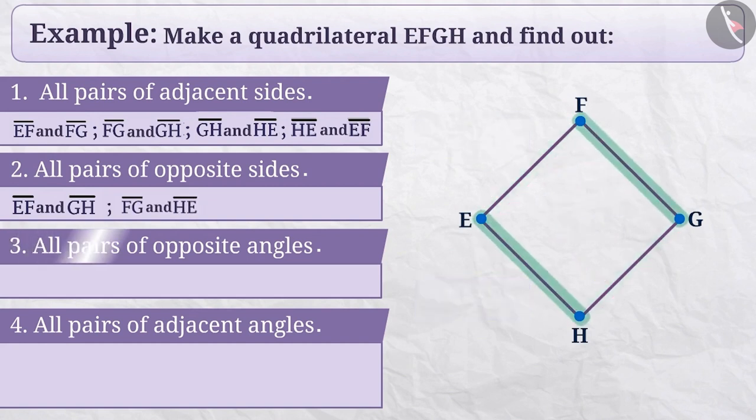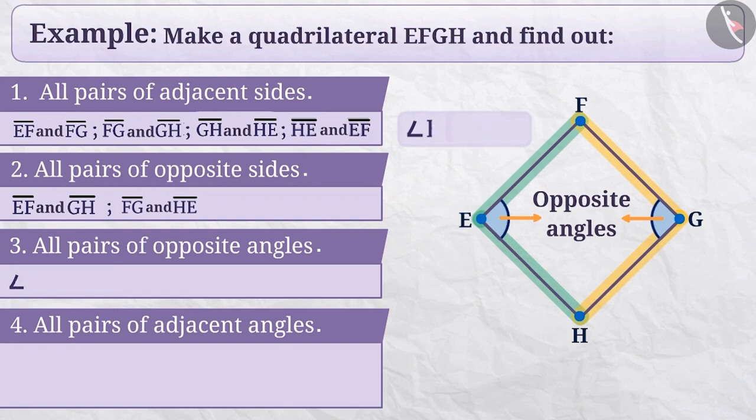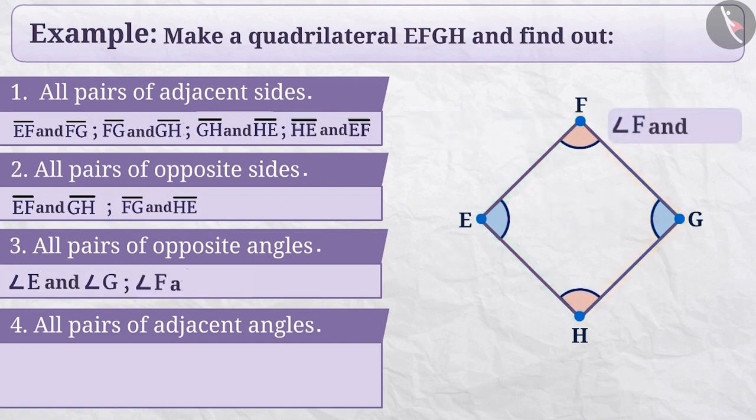Similarly, we can also find all pairs of opposite angles. If no side is common in 2 angles of a quadrilateral, then such angles are called opposite angles, such as angle E and angle G or angle F and angle H.